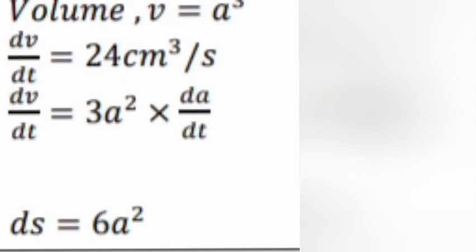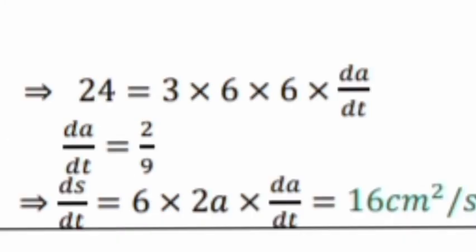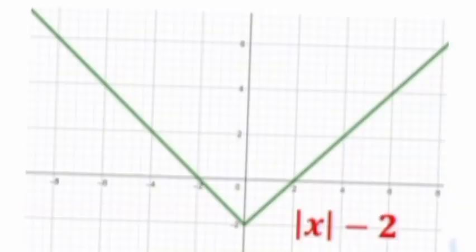Answer 1: Volume V = a³. dV/dt = 24 cm³ per second. dV/dt = 3a² · da/dt. Surface area S = 6a². Substituting: 24 = 3 × 6 × 6 × da/dt, so da/dt = 2/9. Therefore dS/dt = 6 × 2a × da/dt = 16 cm² per second.